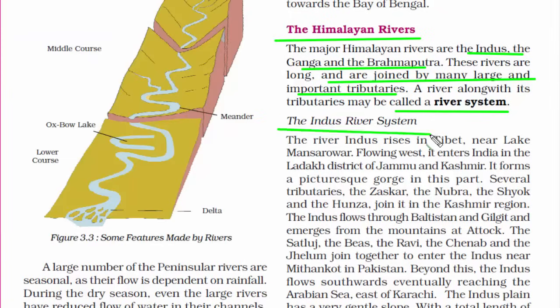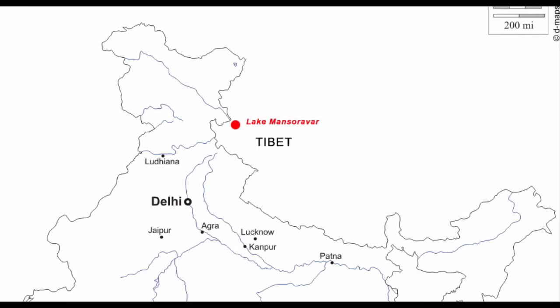Now let us read about the Indus river system. The river Indus rises in Tibet near Lake Mansarovar. Tibet is in China, not India. Then it goes west into the Ladakh district of Jammu and Kashmir. Always remember, Indus first enters the Ladakh district of Jammu and Kashmir. Here the land surface is uneven and rough.